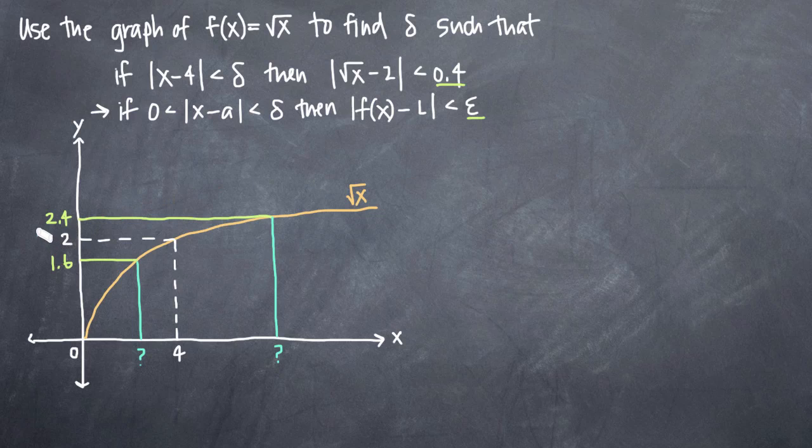So we have our y-coordinate here of 2, and we've been allowed to move 0.4 in this direction and 0.4 in this direction to get to 1.6 or 2.4. And each of these distances here we can call epsilon. This distance is equal to epsilon, and this distance is equal to epsilon. They're both equal to 0.4.